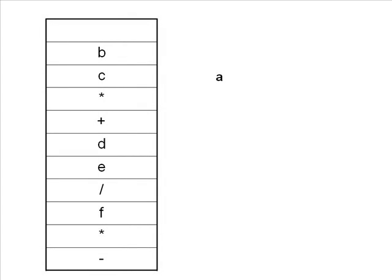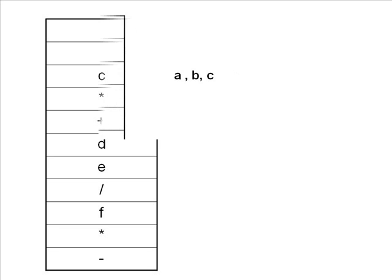First we pop A — we do nothing. We simply keep popping operands until an operator such as multiplication, division, plus, or minus is encountered. Until such an operator comes, we keep popping characters from the stack. So we have popped A, then B, then C.